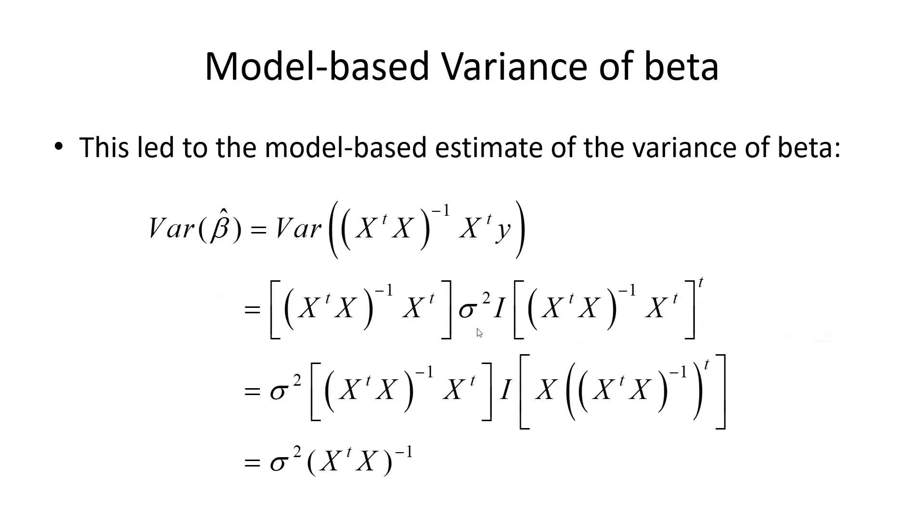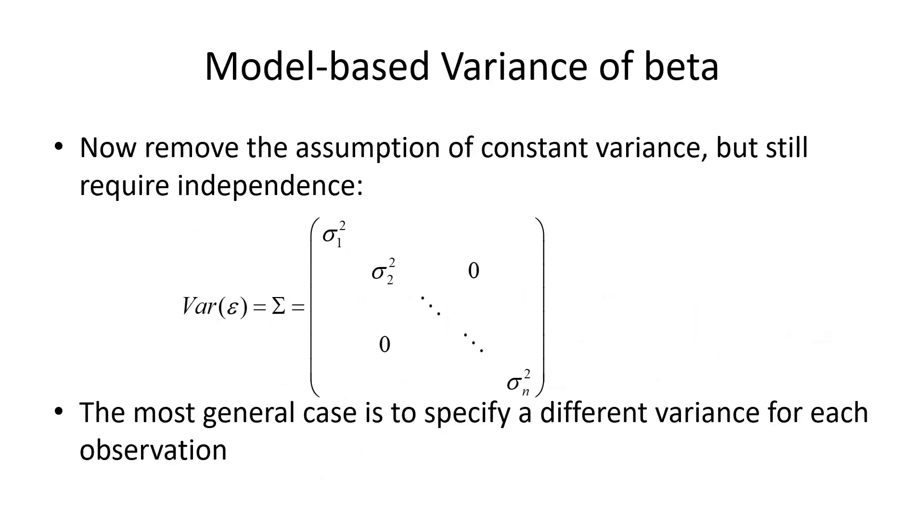If we don't make that assumption, but we still keep independence, then we use this as variance covariance matrix, right?